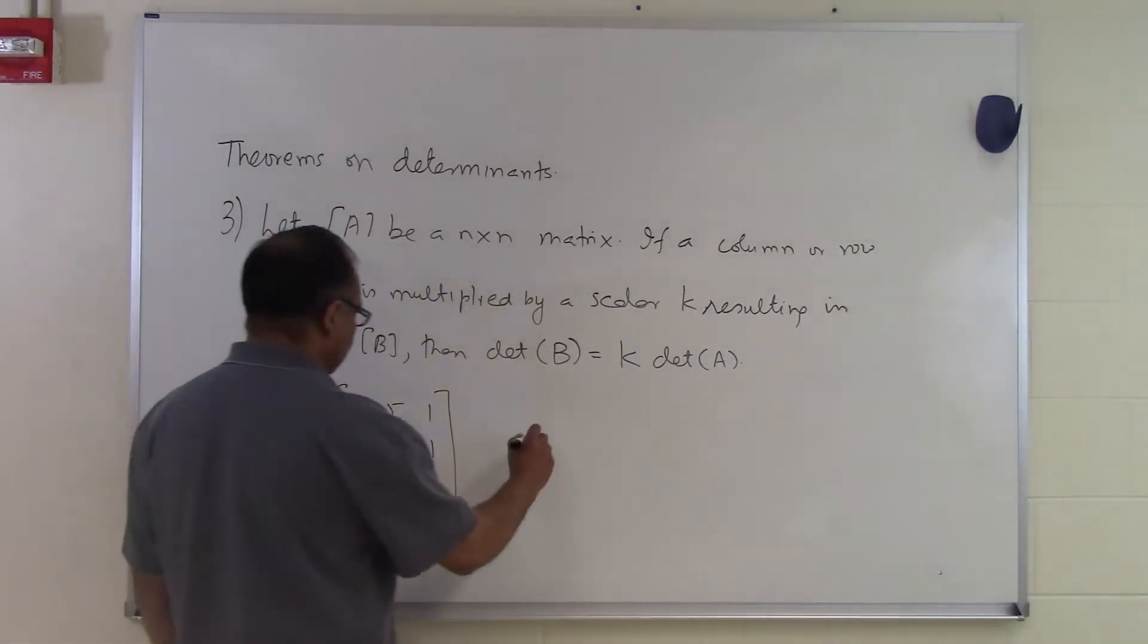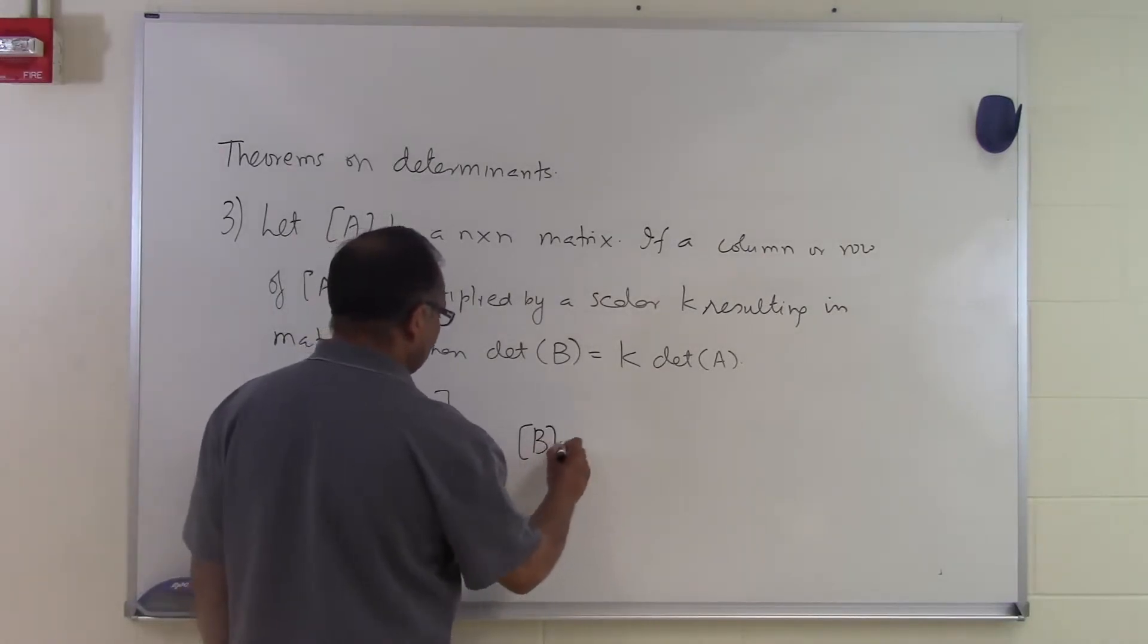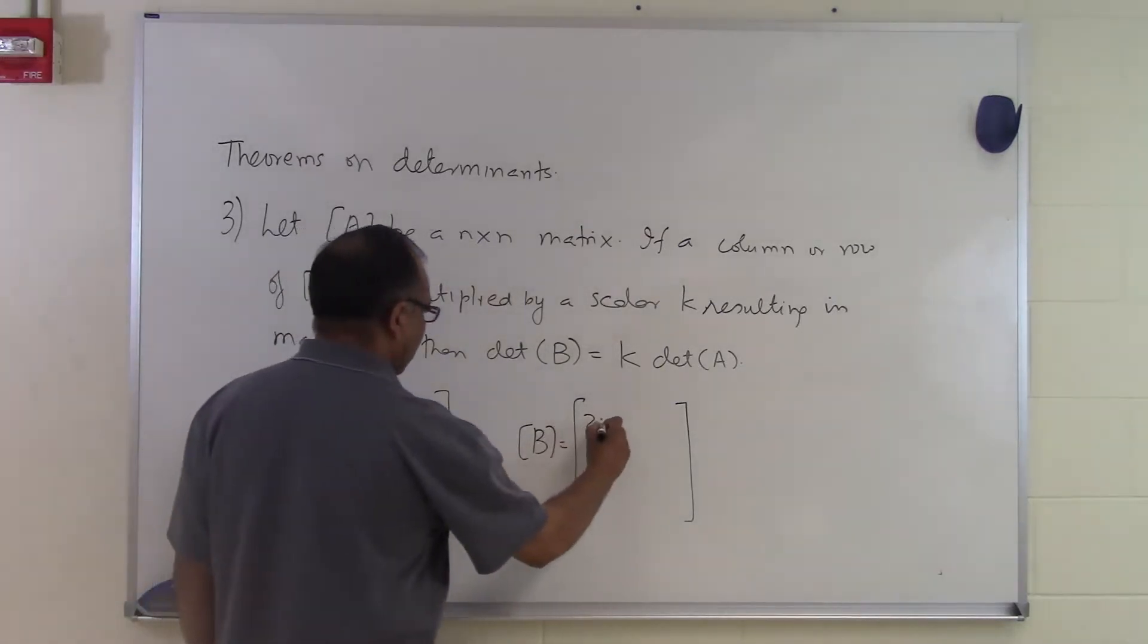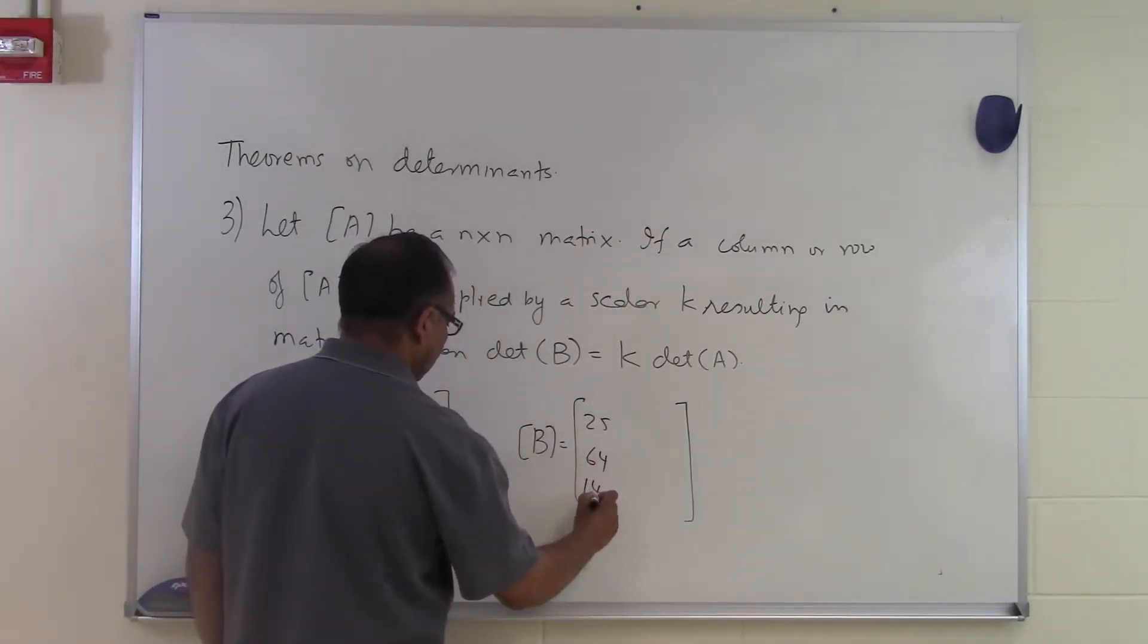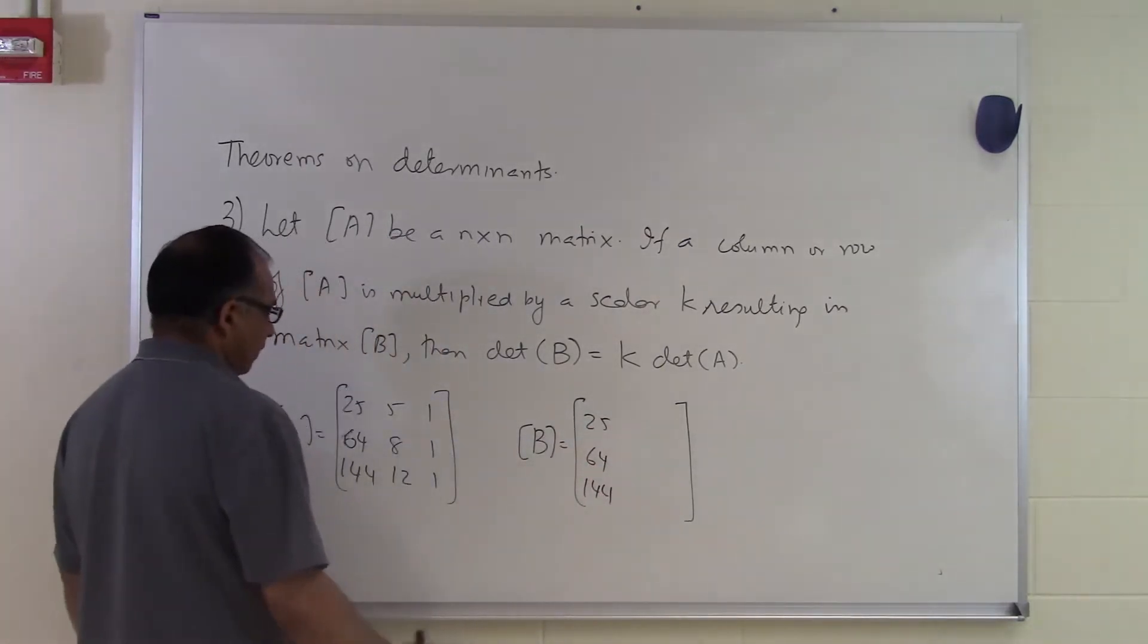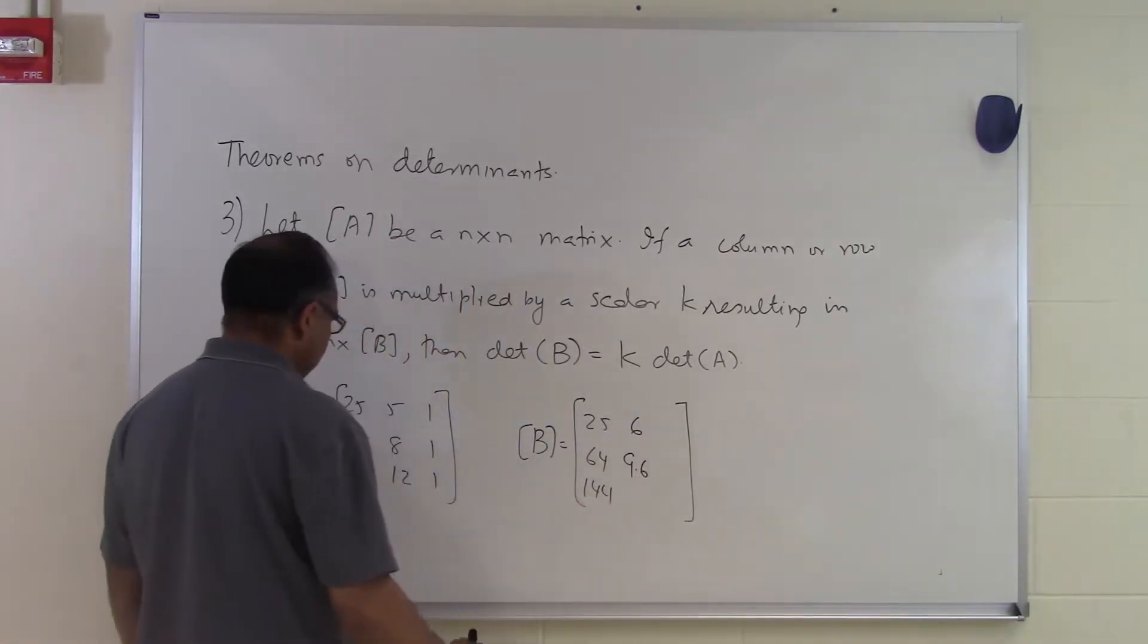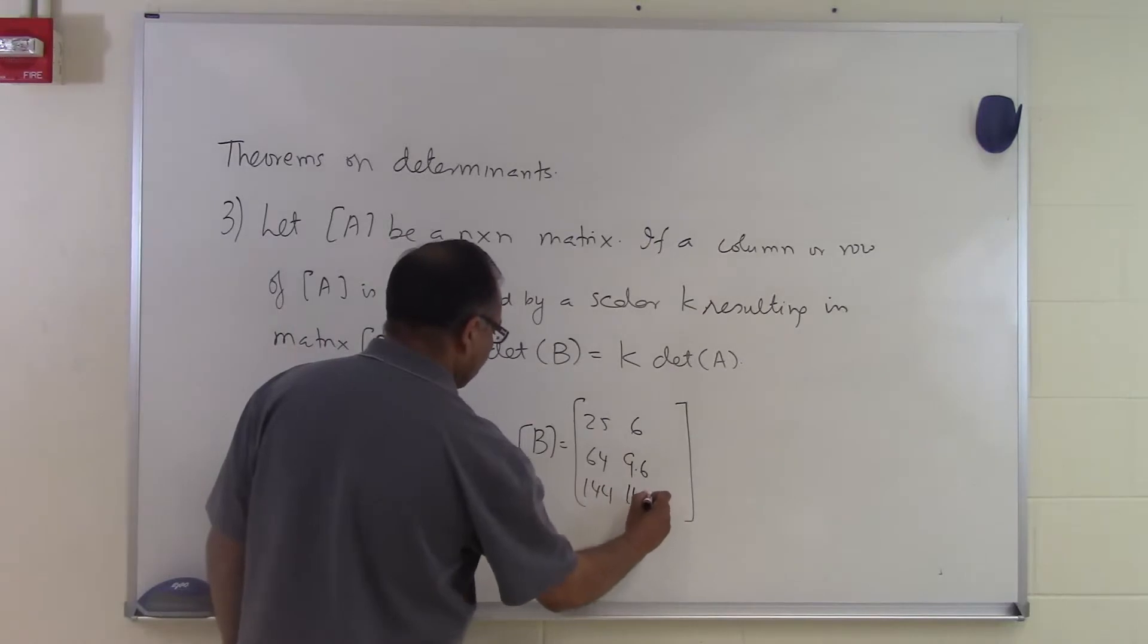And somebody also then gives you another B matrix: 25, 64, 144, 6, 9.6, and 14.4, and 1, 1, 1.